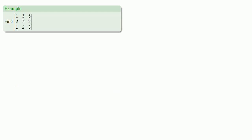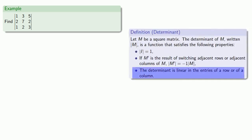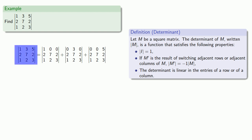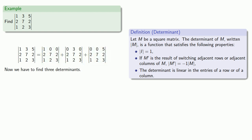So let's say I want to compute the determinant of this 3 by 3 matrix. Our linearity property allows us to break the determinant of the matrix into a sum of the determinants of 3 matrices, where if we take the first rows of these 3 matrices and add them together, we get the first row of the matrix we're interested in. I can find the determinant of this matrix by finding the determinant of these matrices — but now we have to find 3 determinants, so maybe we should look at simpler matrices first.